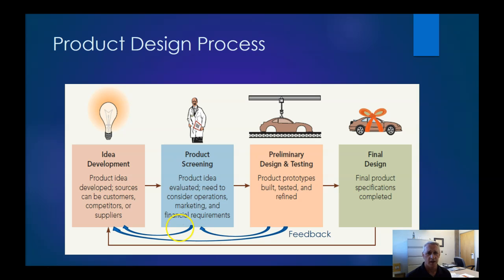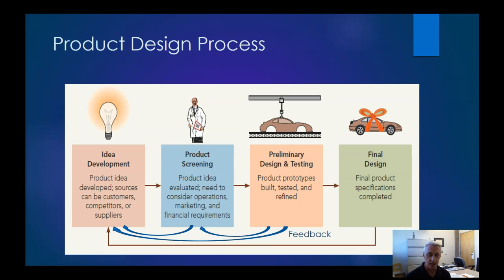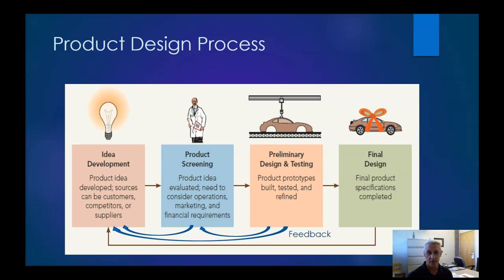For the rest of this talk we'll focus on product design and the design process for products. There's usually ideation — covered in another course — then screening ideas, getting customer feedback, assessing whether there's a market, checking financial requirements, and asking whether we can make it. Then preliminary design and testing: we build prototypes and interact with early adopters. Finally we have a final product design. The old-school approach had only one feedback loop at the end, but anymore there's feedback constantly throughout — like software, which is always in beta because customer feedback drives changes in the next sprint.